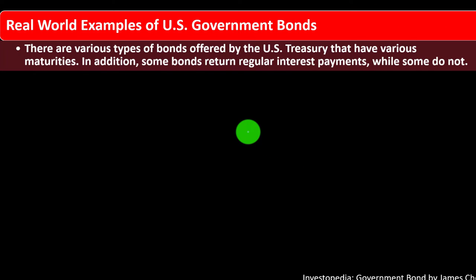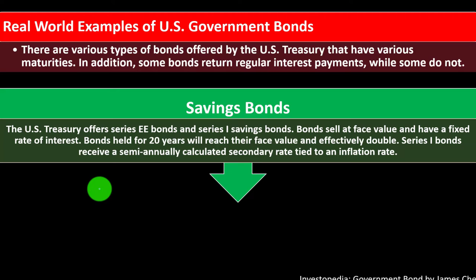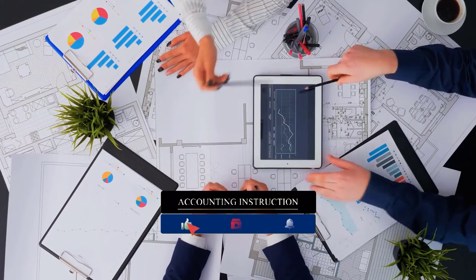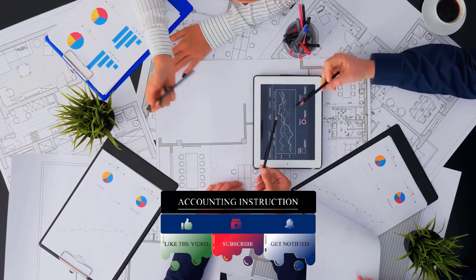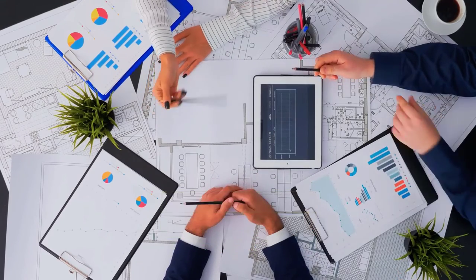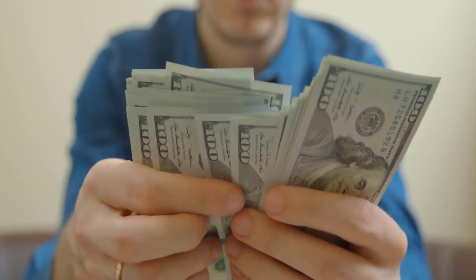There are various types of bonds offered by the US Treasury with various maturities, and some return regular interest payments while others do not. Savings bonds: the US Treasury offers Series EE bonds and Series I savings bonds. Bonds sell at face value and have a fixed rate of return. Bonds held for 20 years will reach their face value and effectively double. Series I bonds receive a semi-annually calculated secondary rate tied to an inflation rate, providing an income stream through those semi-annual payments.